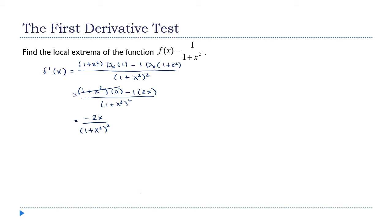Where are the critical values? The numerator: negative 2x equals 0 when x equals 0. For the denominator, when does (1 + x²)² equal 0? Taking the square root of both sides gives 1 + x² = 0, so x² = −1. That's an imaginary number — in calculus we work with real numbers only, so we get nothing from the denominator. There's just one critical value.